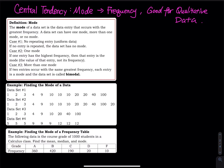In this video we are going to introduce mode. Mode is a type of central tendency — it is used for frequency. Mode is good for describing the central tendency of a qualitative data set, but it also works on quantitative data. There are three cases. The word mode means I am looking for the number or the item that has the highest frequency.